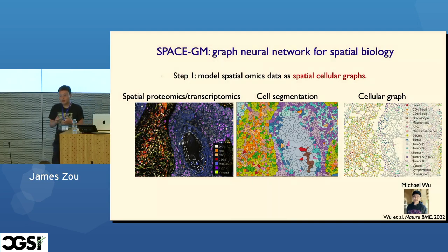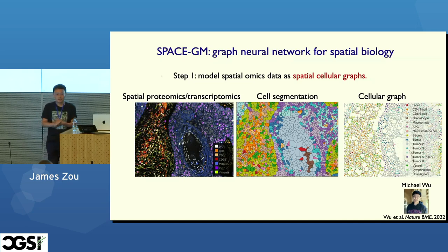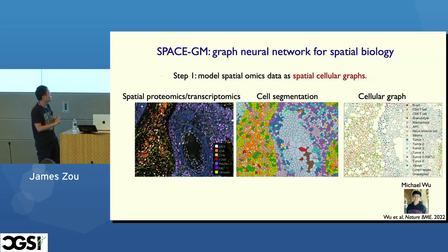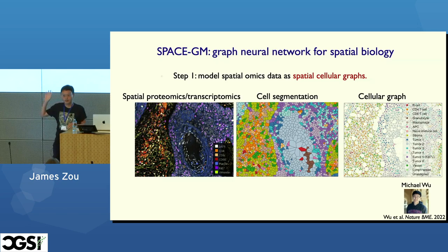I want to tell you about a framework we recently developed called SpaceGM, which proposes a pretty flexible way of modeling different kinds of spatial omics data. The first step: once you collect spatial omics data from spatial proteomics or transcriptomics, we want to turn the raw data into a spatial cellular graph. Starting with multiplex immunofluorescence imaging from Codex, the raw data can have tens of thousands of cells in each section.